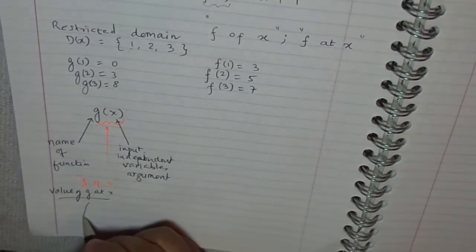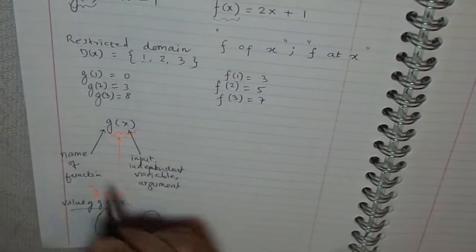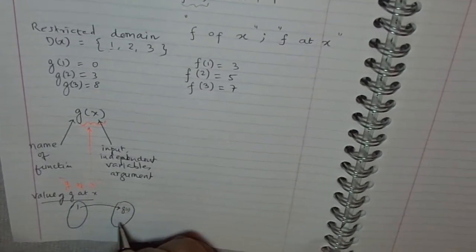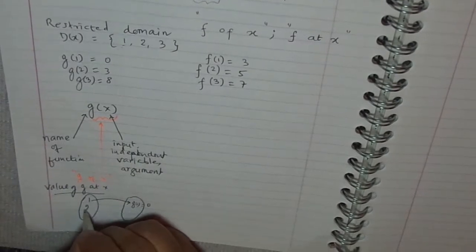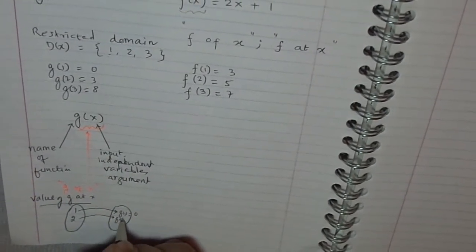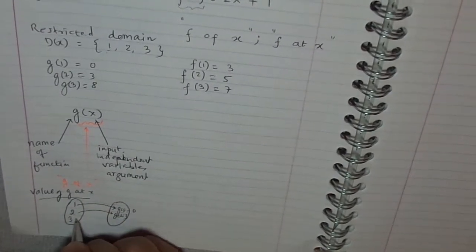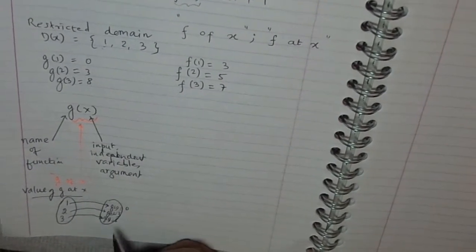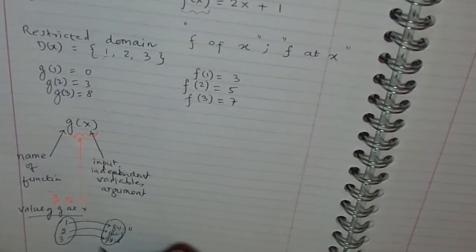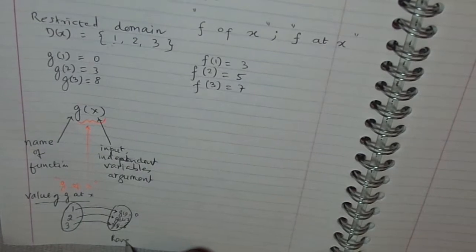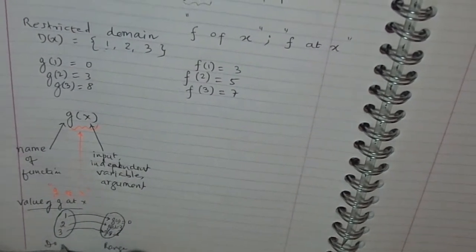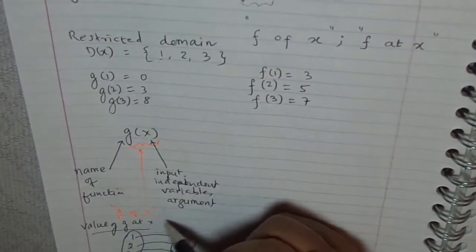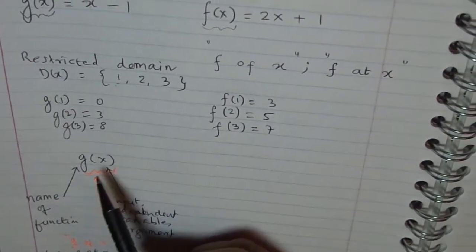For a value 1, when the input was 1, then the output was g(1) which is equal to 0. When it was 2, the output was g(2) which was equal to 3. When the input was 3, output was g(3). The value was 8. So, the set of g's forms the range for restricted domain of 1, 2, and 3. So, in function notation, g of x is actually the value of function at that particular number or a point.